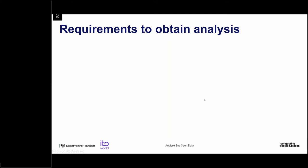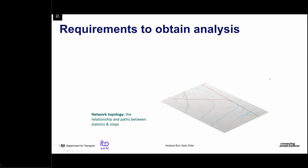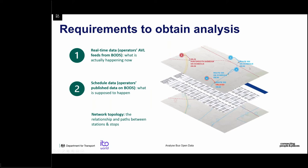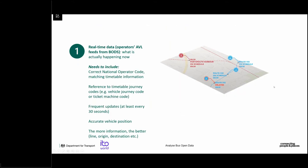There are three elements required to obtain analysis within the tool. First is the network itself — the relationships and paths between stations and stops — which the service takes care of automatically. More importantly, scheduled data needs to be provided within BODS: this is the TransXChange data that operators publish, telling us what is supposed to be happening. We also need the real-time data — operators' vehicle location feeds from BODS — telling us for every single vehicle, hopefully every 30 seconds, what is actually happening.